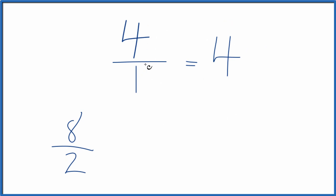Let's multiply the numerator and denominator by 3. 3 times 4, that's 12, and 3 times 1 is 3.